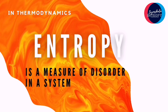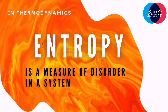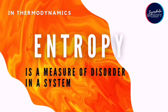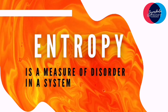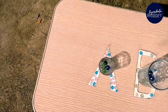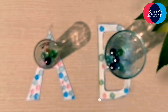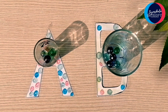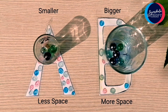In thermodynamics, entropy is a measure of disorder in a system. Let's measure it with a simple example. There are five marbles — our molecules — inside each glass, one of which is significantly smaller than the other.